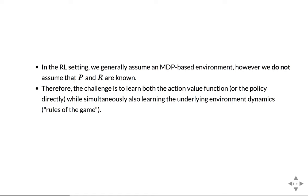In our setting of reinforcement learning, as opposed to other settings like control, we do not know the probability to transition from state to state, and we don't know how the reward will behave. We don't know what will happen when we do an action and what reward we will receive. So we have to learn both the rules of the game simultaneously with the action value function Q — that's the challenge in our reinforcement learning setting.